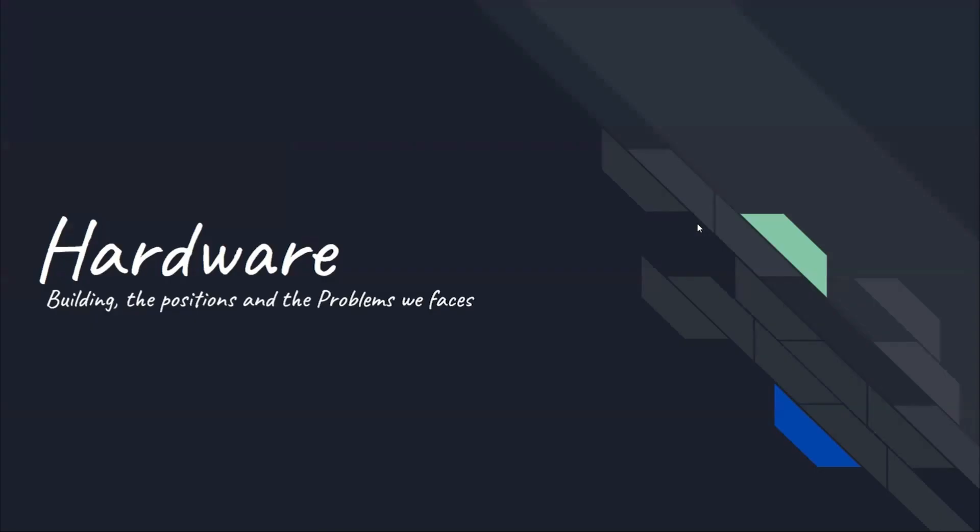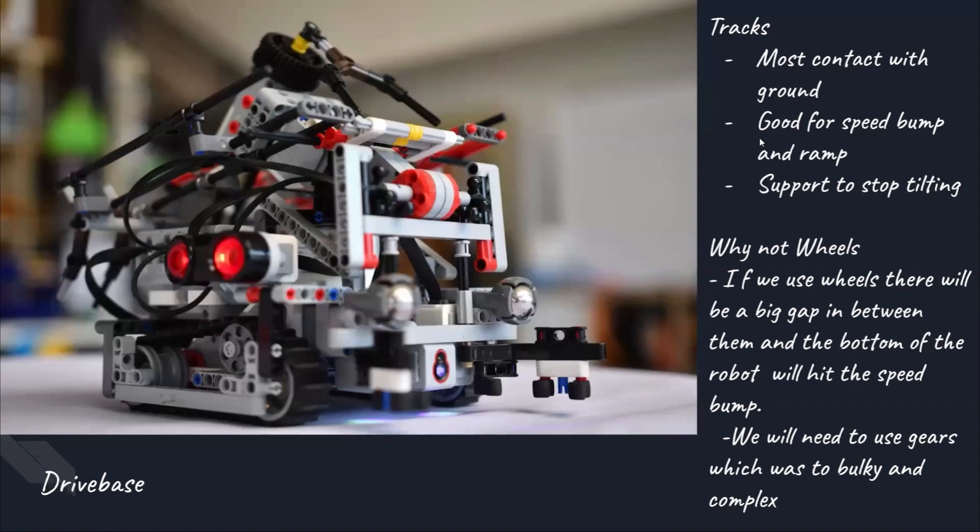We will now talk about hardware. We are using tracks as they have the most contact with the ground and can drive over speed bumps and ramps covering the channels without any problems. At the start, we were using shorter tracks. This was not ideal as they were too small and started slipping. When we tried to stretch them, we changed them to these normal tracks which fit better and added an extra wheel so that they are not loose.